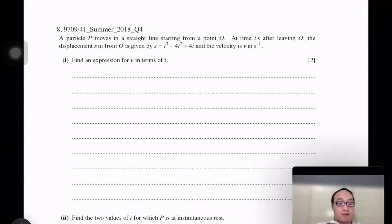Number eight, about general motion. The particle P moves in a straight line starting from the point O. At time t after leaving O, the displacement s from O is given by s equals t cube minus 4t square plus 4t, and the velocity is v.